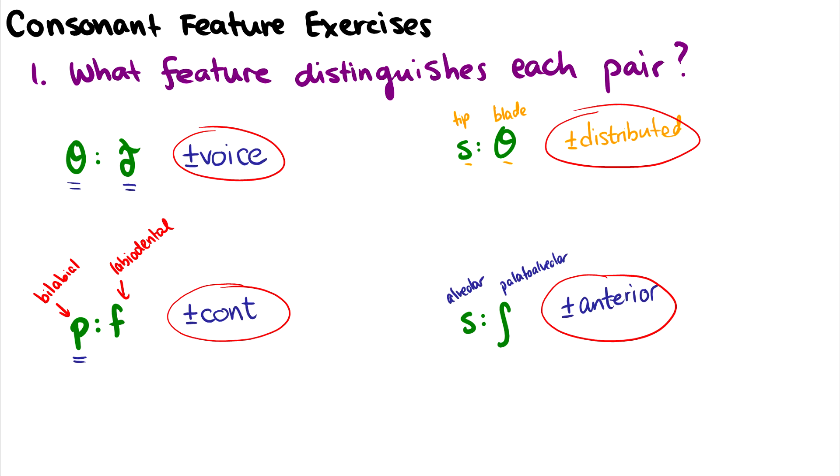So for instance, if I want to have a natural class of these alveolar sounds, and I narrowed it down, and I have this palatal alveolar in there, I just think, if I put plus anterior in there, I get rid of that ʃ, I get rid of that palatal alveolar fricative.